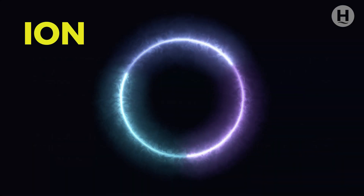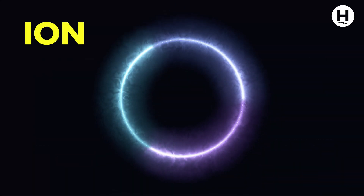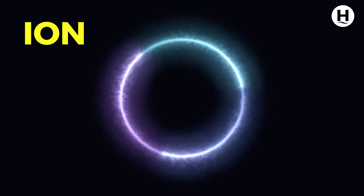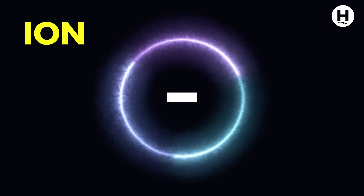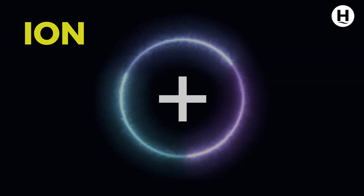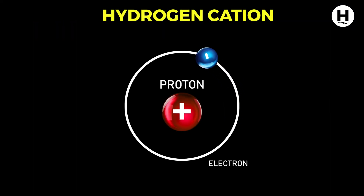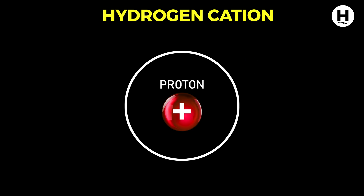An ion is simply something that is not neutral but has a net negative or net positive charge. If an electron is removed from a hydrogen atom, we have only the proton, making the hydrogen atom a positive ion.